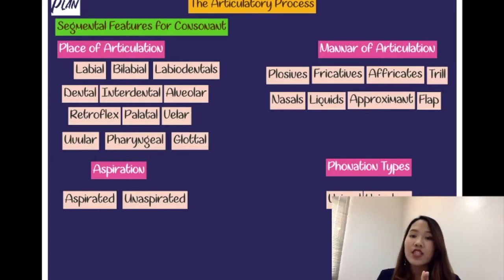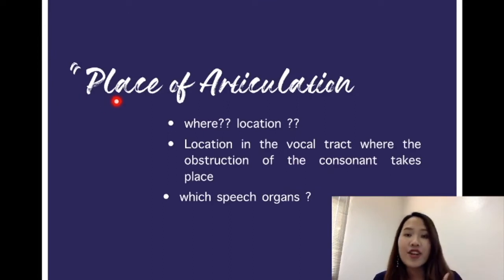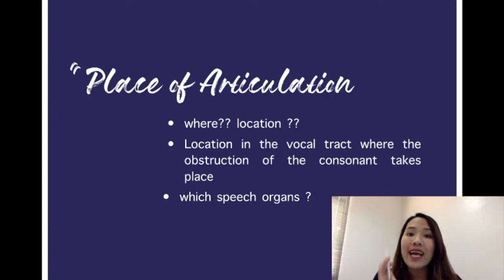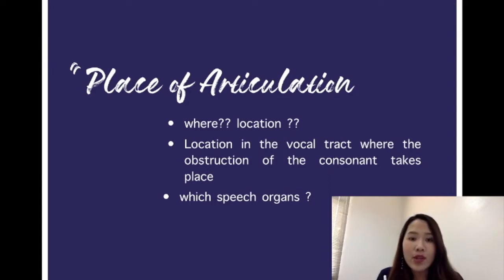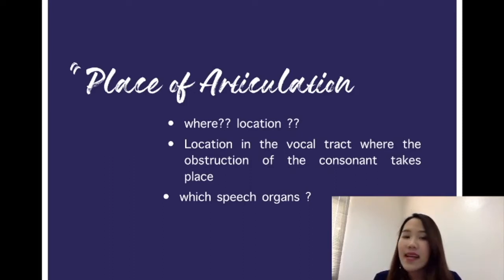Let's start with place of articulation. When we talk about place of articulation, it means: where exactly in your body do you use it to make the consonant sounds? Where exactly in your body does the consonant sound take place? So place of articulation refers to the specific location in the vocal tract used to produce a consonant.